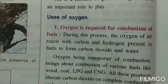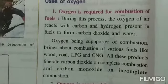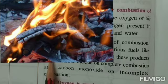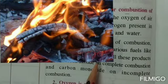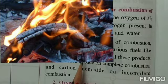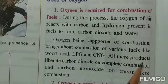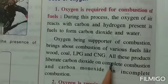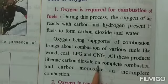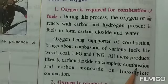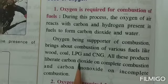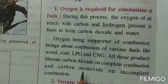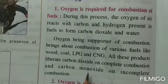Oxygen is a supporter of combustion — it supports the burning. Without oxygen, nothing will burn. It brings about combustion of various fuels like wood, coal, LPG, and CNG. These products liberate carbon dioxide (CO2) on complete combustion and carbon monoxide (CO) on incomplete combustion. CO2 is formed if a substance burns completely — 100% combustion. If the substance is not able to burn completely, that is incomplete combustion, then carbon monoxide (CO) is formed.